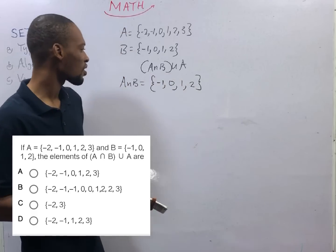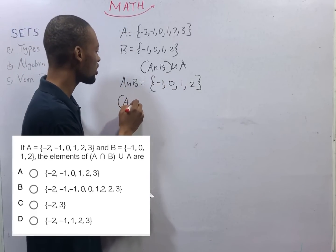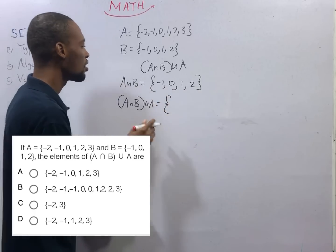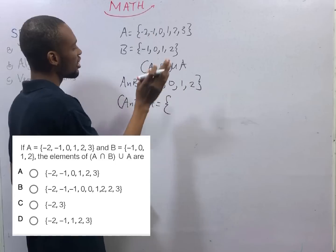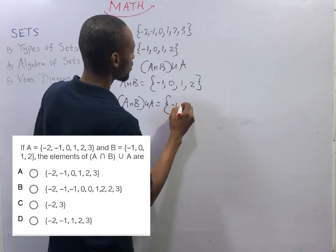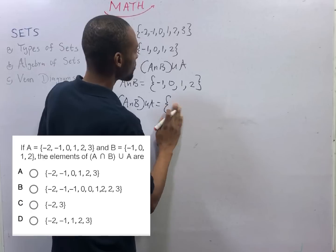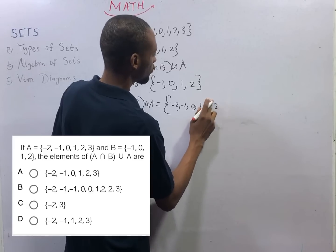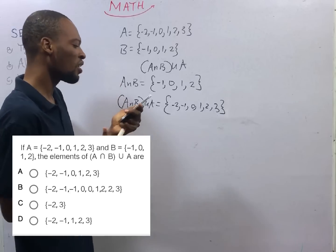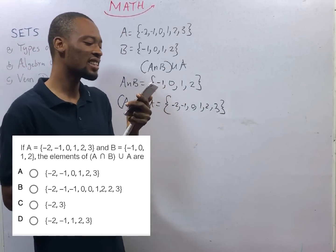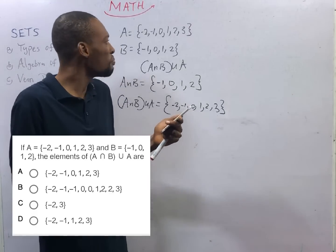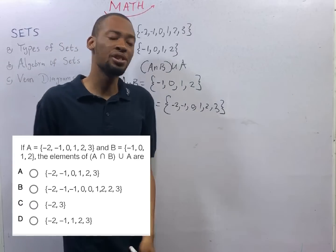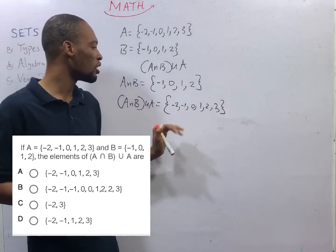So ladies and gentlemen, this is A intersection B. And what is the question? A intersection B and union A. This should simply be the union of this set and this set. That should be, starting from minus 2, minus 1, 0, 1, 2, and 3. Now, look at this. Under the law of set, we say that A intersection B union of A will be the same thing as A. So basically, nothing will change. This will remain. A intersection B union of A is the same thing as this set A. But that shouldn't be a big deal for you because we've already solved the long way and we've gotten this answer. And option A is the correct option.